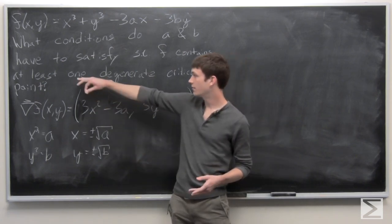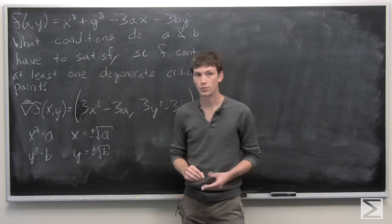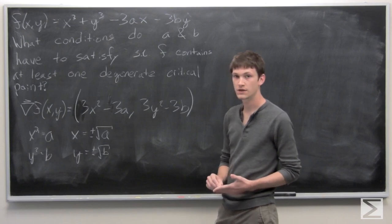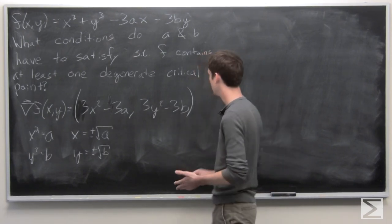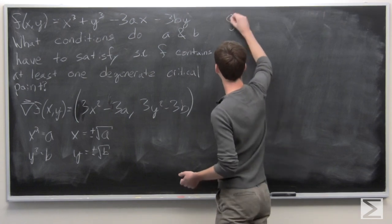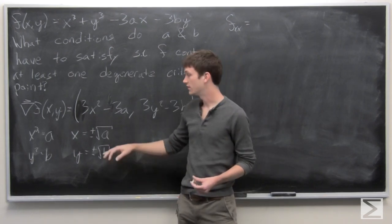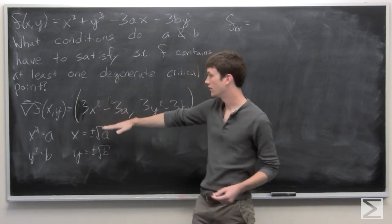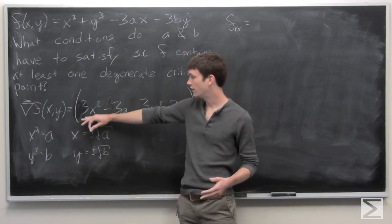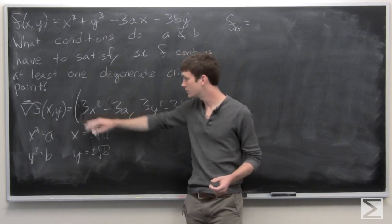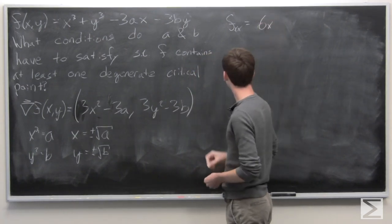But we want critical points to be degenerate. In order for a critical point to be degenerate, that means the determinant of the Hessian matrix is equal to 0. So let's find the components of the Hessian matrix, which are the second partial derivatives of f. Taking the partial derivative of f sub x with respect to x, we get 6x.